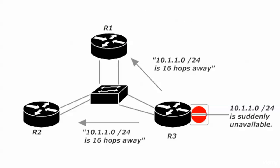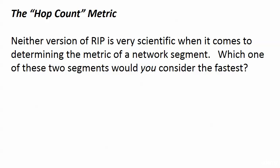Router 3 doesn't stop advertising — it continues to advertise with a poisoned metric. That's where the name comes from. It tells routers 1 and 2 the route is 16 hops away. Routers 1 and 2 receive that update and take the route out of their tables, stopping advertising it. As a result of that poisoned update, router 2 will no longer advertise the route. That's why route poisoning is a force for good — it sounds evil, but it is indeed a force for good.